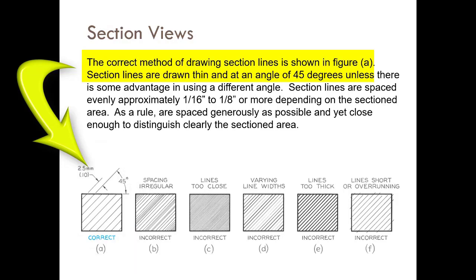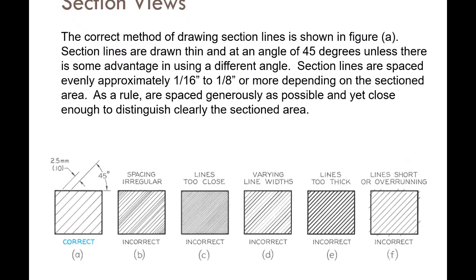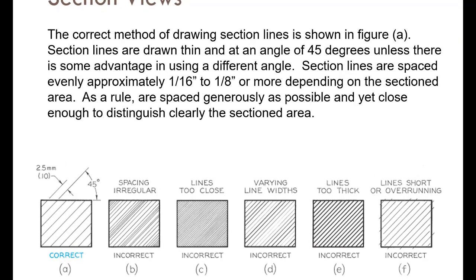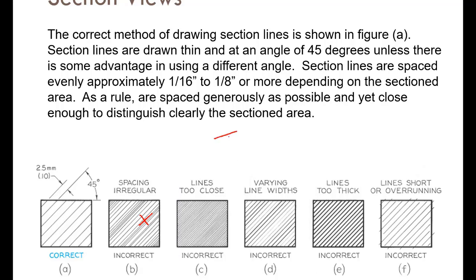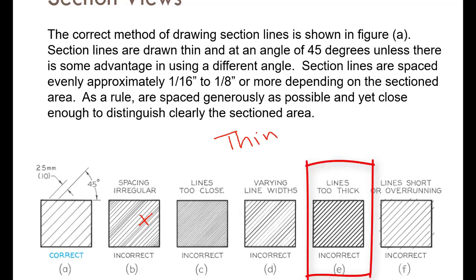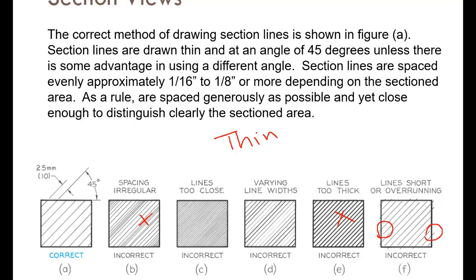The distance between section lines should be between 2 and 4 millimeters, with an average of 2.5mm. It is incorrect to make the spacing irregular — close, far, close — or to make the lines too close (less than 2.5mm). Section lines are always thin, not thick. You must not make them short or over-running.